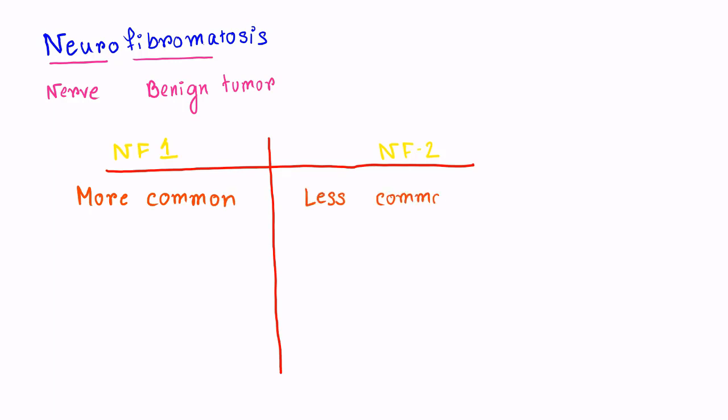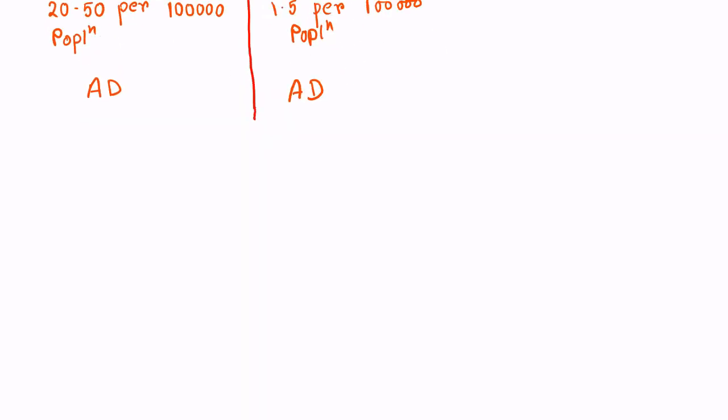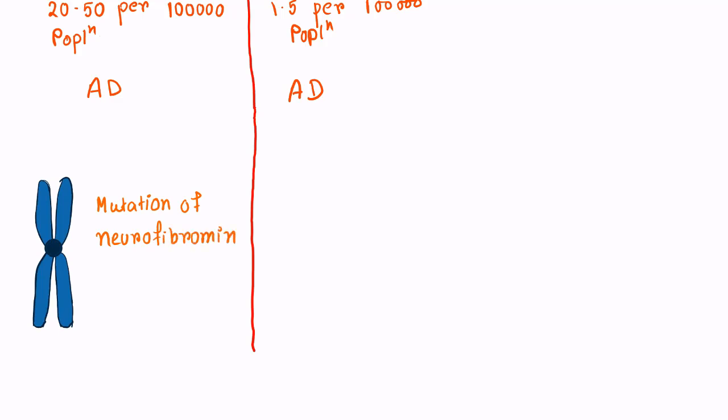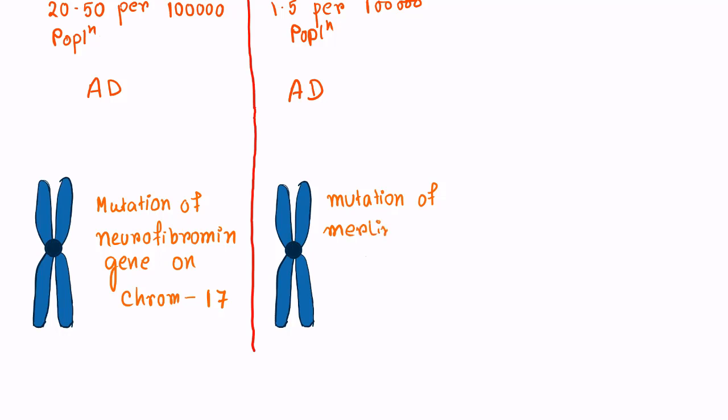The Neurofibromatosis 1 is more common than NF2. The prevalence of NF1 is 20-50 per 100,000 population, and prevalence of NF2 is 1.5 per 100,000 population. Both are autosomal dominant type. NF1 is caused by mutation of Neurofibromin gene on chromosome number 17, while NF2 is caused by mutation of Merlin gene on chromosome number 22.